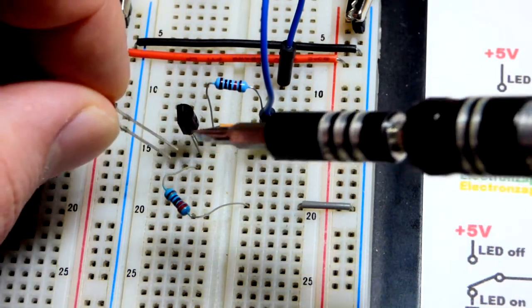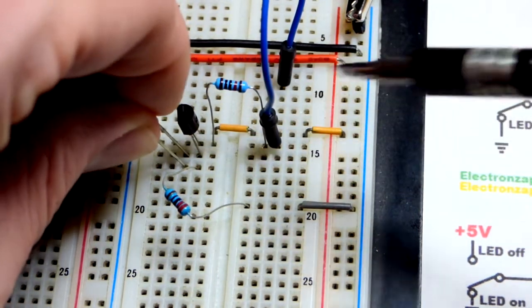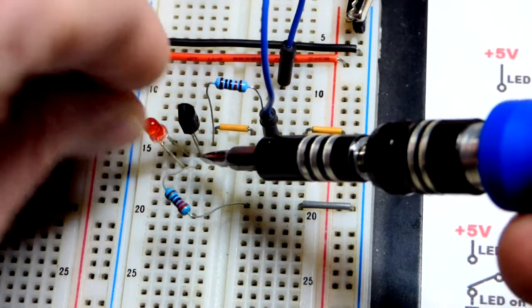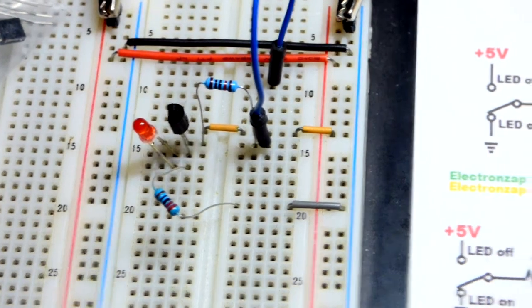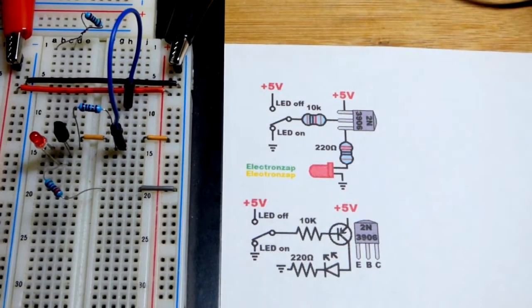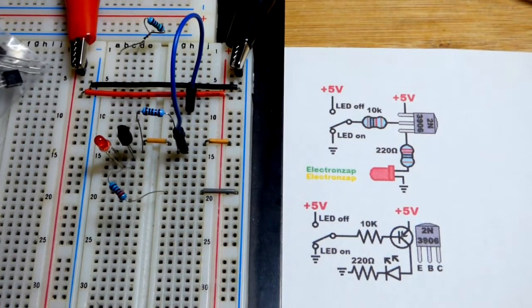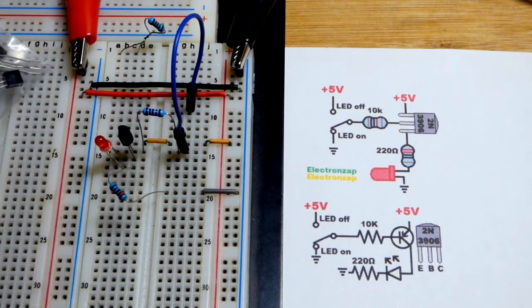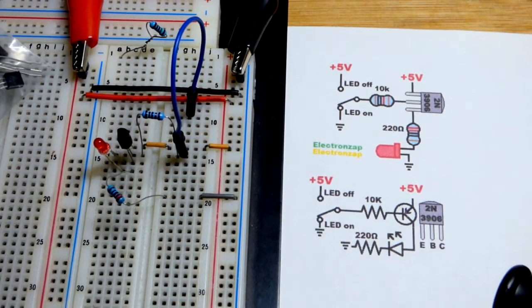You've got to make sure you put the LED in the right way. Long lead the anode towards more positive. Short lead the cathode towards more negative. We're using a 220 ohm resistor because 5 volts is not a whole lot for lighting a red LED. They don't get terribly bright. So you want somewhat high current.